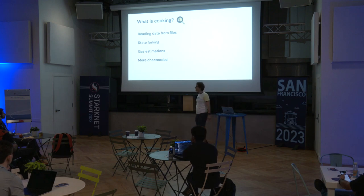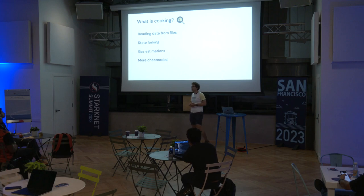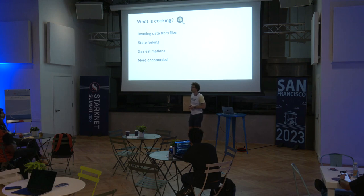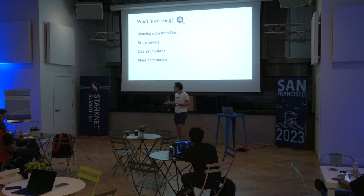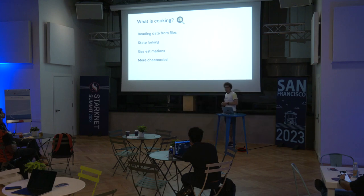What is cooking right now and what we're working on — I think in the next few weeks, two to four weeks: reading data from files. Text files are already supported, but JSON is work in progress. We're working on state forking, so you'll be able to specify a starting state you want to fork for your tests, and your tests will run on that state. This is very useful when your contract has a lot of dependencies and simulating everything locally is complex. Also, gas estimations will be included soon, and of course more cheat codes — I think there are at least a dozen right now.